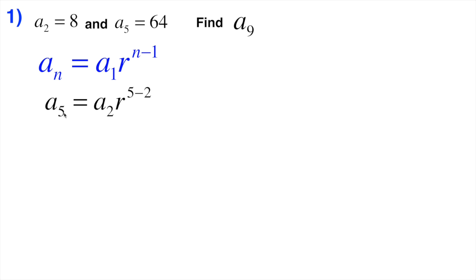Okay, so we know what a₅ is. a₅ is 64. a₂, we know that. a₂ is 8, so I'm going to plug that in. And we know, obviously, we can kind of start simplifying here. 5 minus 2, that's a very easy one. That's just 3.